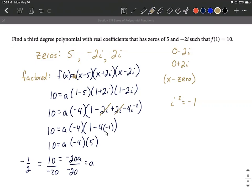The only thing left to be done on this to get our function that we're looking for is take this back up to the original, plug it back in. So our function that we were looking for is f of x equals negative one half, x minus 5, x plus 2i, and x minus 2i.